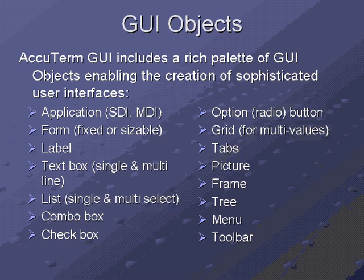These objects all have properties such as font, background color, and value. They may also generate events like click, validate, or closed, which are passed back to the application for handling.